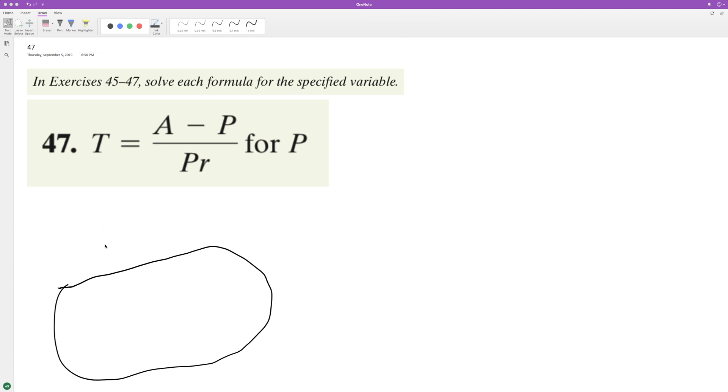In this case, we're solving for variable P. So what we need to do here is... I'll just write it out. We have A minus P over PR equals T. We need to multiply by...